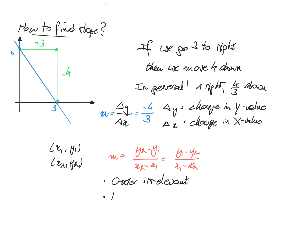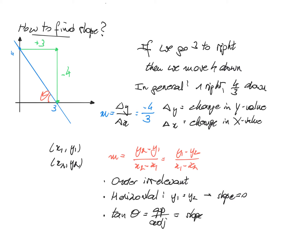If we have a horizontal line, then y1 is equal to y2, and so the slope is 0 according to the formula, which corresponds to what we saw in the examples. And if we want to make a link with trigonometry, let's call this angle theta: the tangent of theta is the opposite divided by the adjacent, so the tangent of theta also corresponds to the slope m.